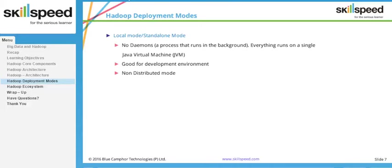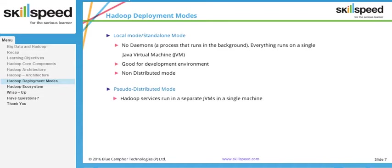The second mode is called pseudo-distributed mode, and this is the mode mostly used by developers. Throughout this course, we will be demonstrating almost all aspects using pseudo-distributed mode. In pseudo-distributed mode, you install Hadoop on a single machine and simulate an entire Hadoop cluster on that machine. As a developer, you can test a sample program with sample data, simulate the cluster, try out your code, and if it works successfully, implement it on a practical cluster.